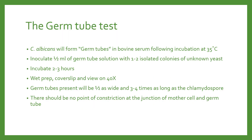The germ tube test is the best single test to identify Candida albicans. We take a half milliliter of bovine serum and add one to two colonies of our unknown yeast. We incubate that for two to three hours at body temperature, 35 degrees, then wet prep it by taking a colony in a little bit of saline with a coverslip and viewing it with low light at 40X. Germ tubes that are present are half as wide and three to four times as long as the chlamydospore, with no point of constriction at the junction of the mother cell and the germ tube.